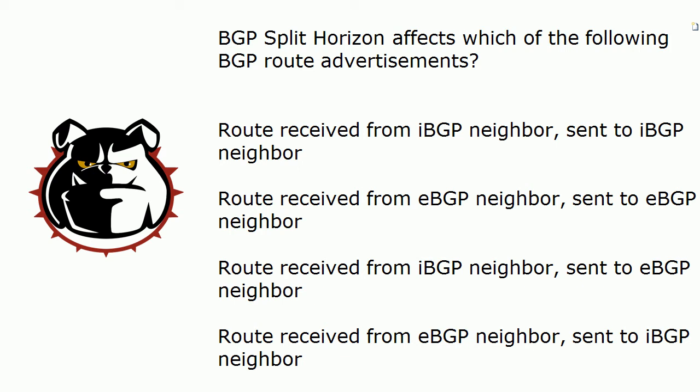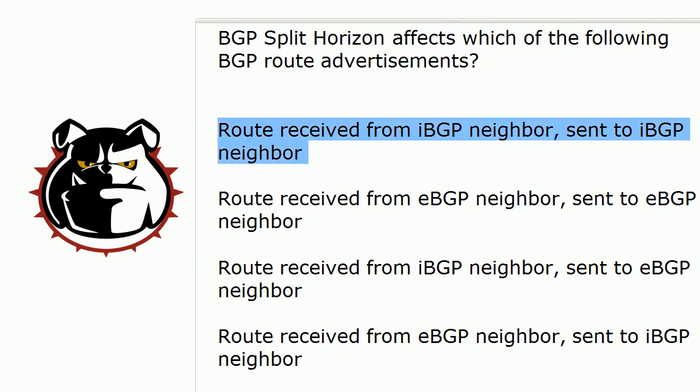When it comes to BGP split horizon, there's one scenario here that is affected, and it is the most innocent sounding one of all. A route received from an internal BGP neighbor and sent to another internal BGP neighbor — can't work. Split horizon is not going to let that happen. This is so easy to overlook. In a lab, you can have BGP up and running on TCP port 179 and see some routes, but if you don't see all of them that you're expecting to see, the first thing I would check is this very simple rule, because route reflectors can help you get around that.